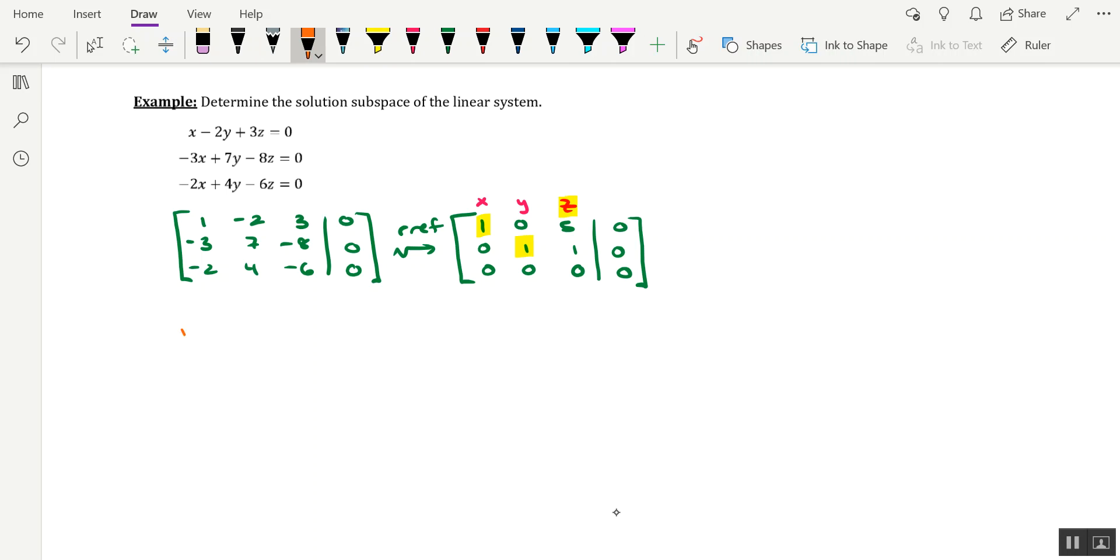So down below, we're going to say, let z equal t. And that's going to allow us to rewrite the equation from the first row in terms of t, and the equation from the second row in terms of t.